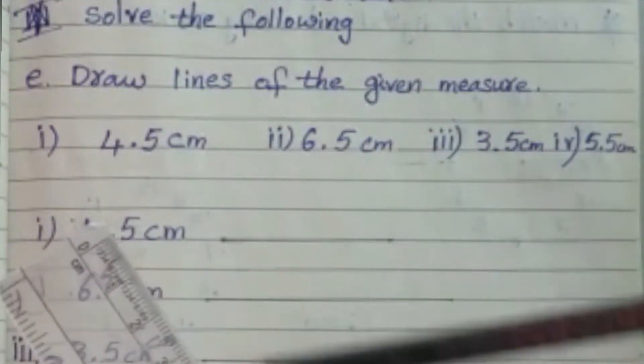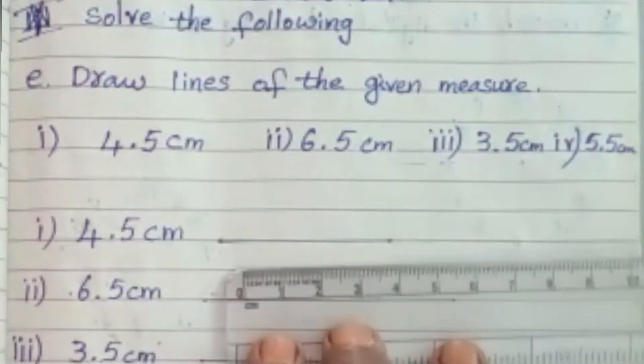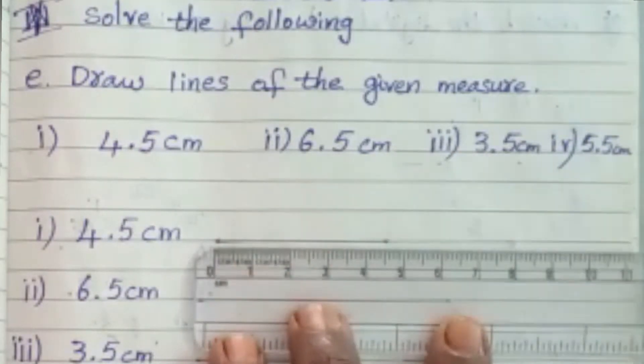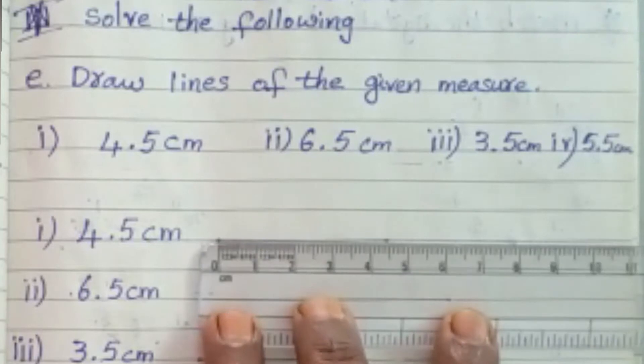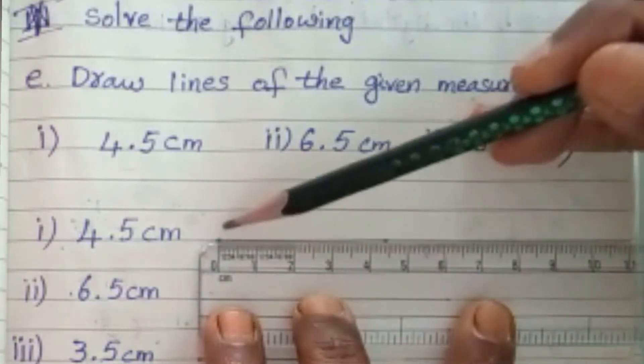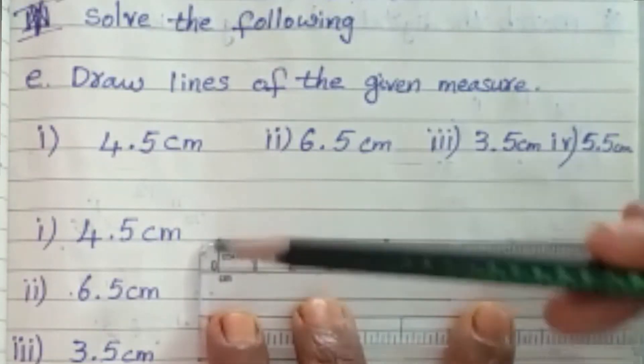Take the centimeters reading part and draw the lines for the given questions. Here the first question is 4.5 centimeters. So place the scale at starting point 0 and end at 4.5 centimeters, and draw the line at 4.5 centimeters from 0.